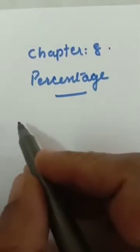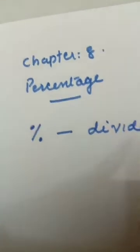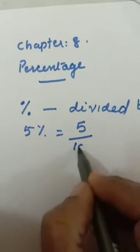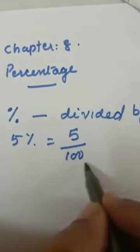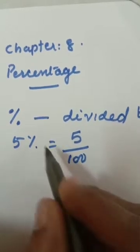Chapter 8: Percentage. First you have to understand what is the meaning of percentage. Whenever you will hear percentage, the symbol is like this. Percentage meaning divided by 100. Suppose 5 percentage — that means 5 divided by 100. The denominator is 100, then only you can say 5 percentage.